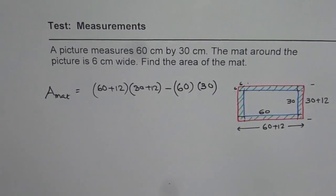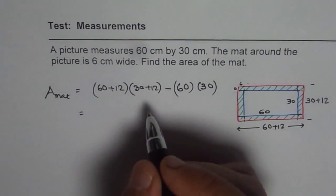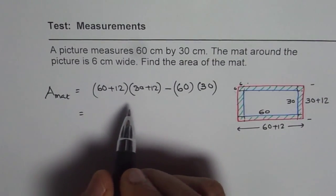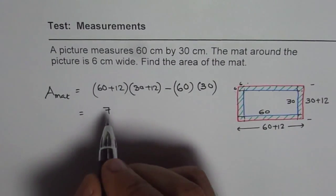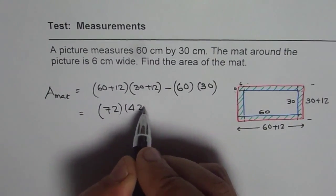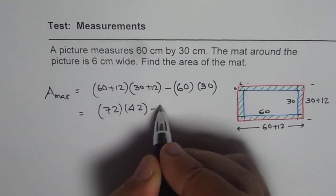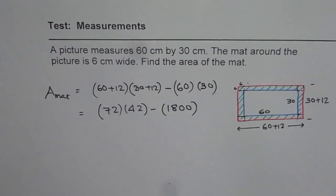So you can always use your calculator and find this answer. That is how you can find area of the mat. This could be simplified also but we will just use calculator, not bother much. It is 72 times 42 minus 6 times 3, 1800. So now we can use the calculator.